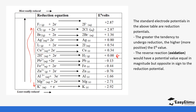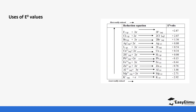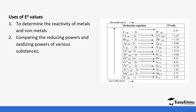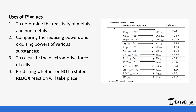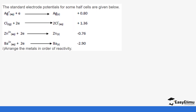The negative values will always form the anodes — those with a higher tendency to lose electrons will be the anode, and those with a higher tendency to gain will be the cathode. The E values are used to determine the reactivity of metals and non-metals, to determine reducing and oxidizing powers of substances, to calculate the EMF or electromotive force of cells, and to predict whether a reaction will occur or not.